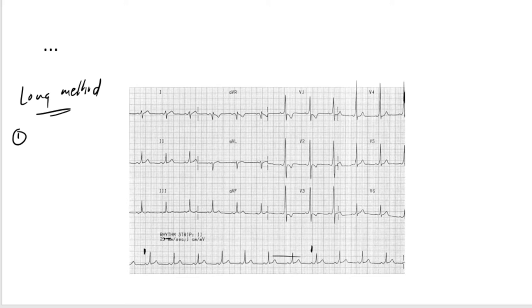Every ECG that you get, at the bottom here, they will always have an elongated lead, which is lead two, actually. Lead two, it's an elongated format which we call a rhythm strip. Now, the long method dictates that you count 30 big boxes.